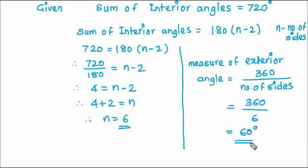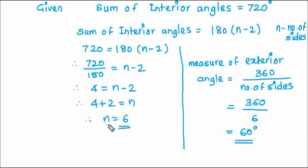So, how did we do? We knew the sum of interior angles. From the sum of interior angles, we found out the number of sides because we have a relation between sum of interior angles and number of sides. And once we get number of sides, we can find the measure of exterior angle by doing 360 divided by number of sides.